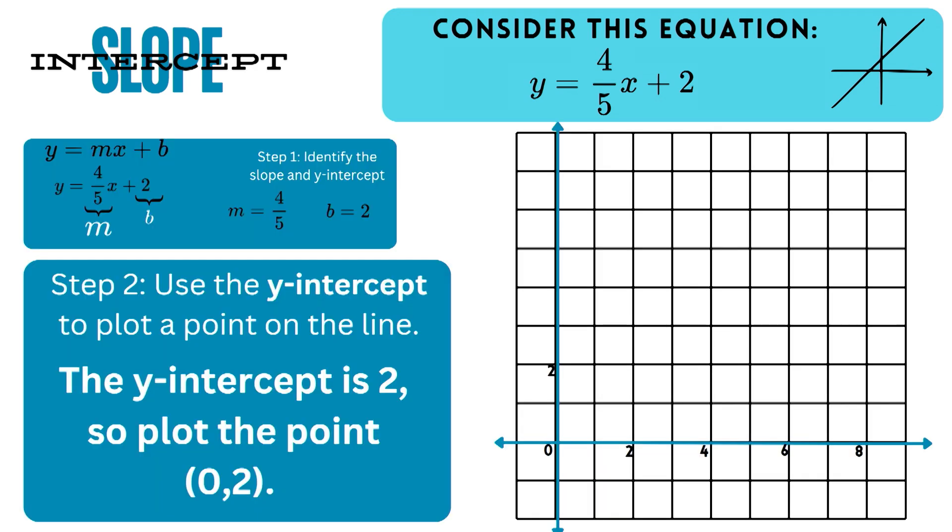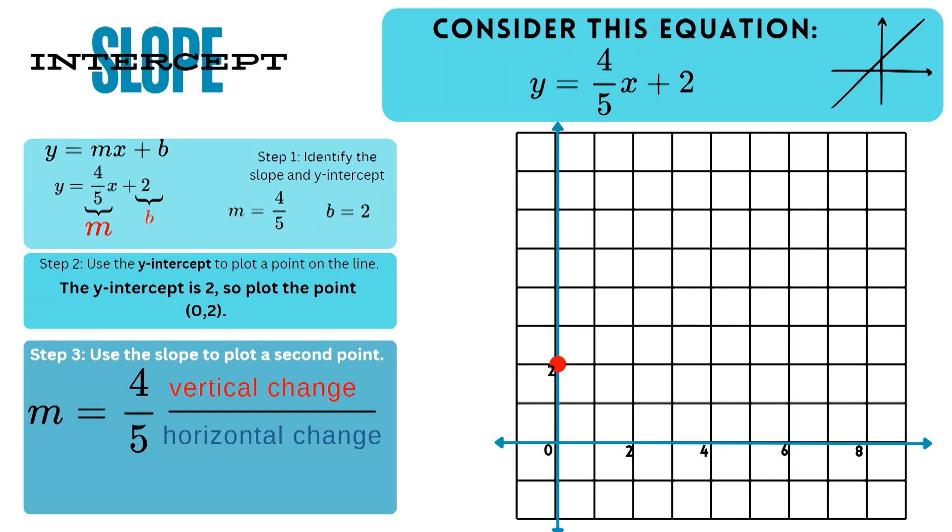Now, let's move on to step number 2. We're going to then use the y-intercept to plot a point on the line. So our y-intercept is 2. Well, if our y is 2, our x is already going to be considered as 0. So therefore, it's pointed at 0, 2.